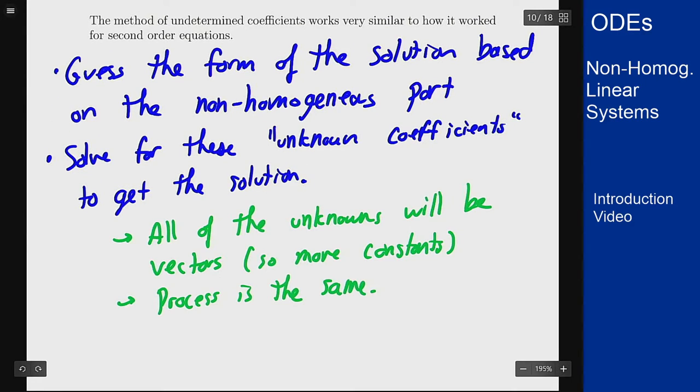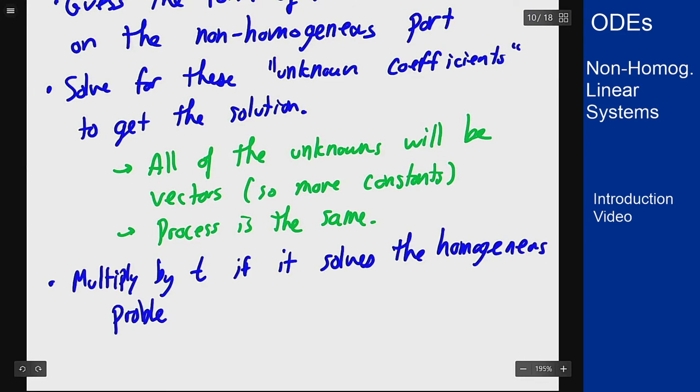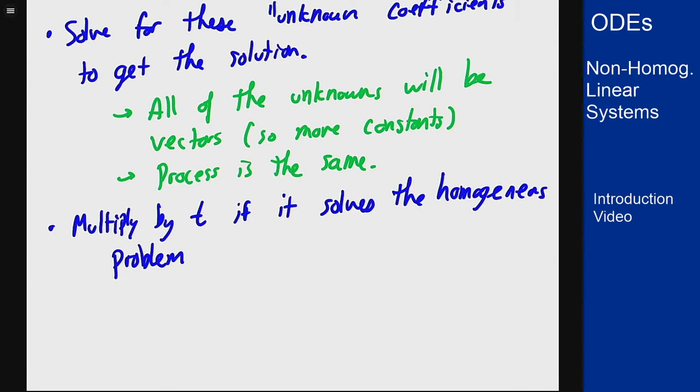We still have the same tricks of multiplying by t if something solves the homogeneous problem, but in this case you generally want to include both the part you multiplied by t and the original part in the answer because of how the eigenvalues and eigenvectors work. It depends on how the vectors line up with the equation, so you'll want to include both the t version and the non-t version when trying to solve for these coefficients.